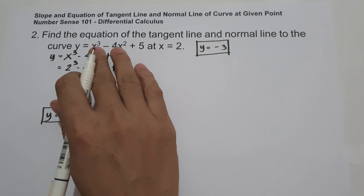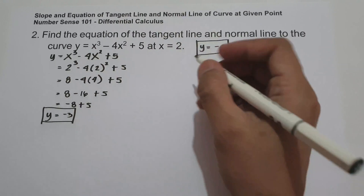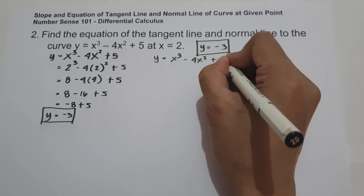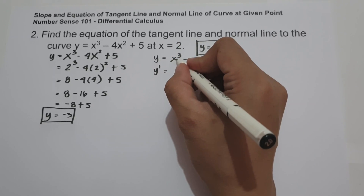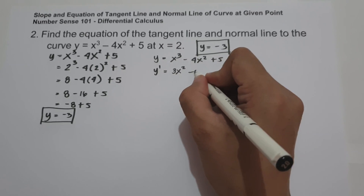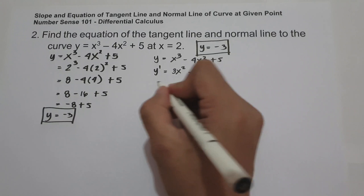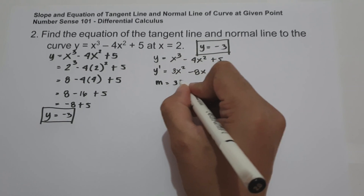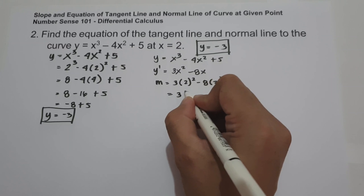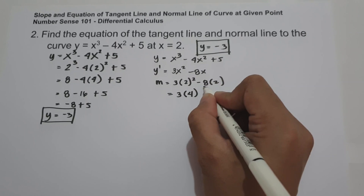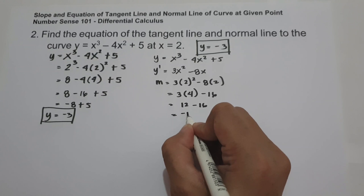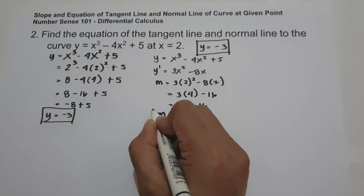Now we find the derivative to get the slope of the tangent line. y prime equals 3x squared minus 8x. Substituting x = 2: slope equals 3 times 4 minus 8 times 2, that is 12 minus 16, which equals negative 4. That is the slope of the tangent line.